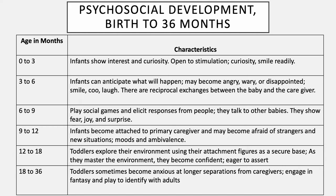There are reciprocal exchanges between the baby and caregiver. From six to nine months, they play social games and elicit responses from people. They talk to and even like to touch other babies. They show fear, joy, and surprise. From nine to 12 months, infants become attached to their primary caregiver and may become afraid of strangers and new situations. They may have moods and experience ambivalence. From 12 to 18 months, toddlers explore their environment using their attachment figures as a secure base, becoming confident and eager to assert their newfound freedoms. From 18 to 36 months, toddlers sometimes become anxious at longer separations from caregivers and engage in fantasy and play to identify with adults.